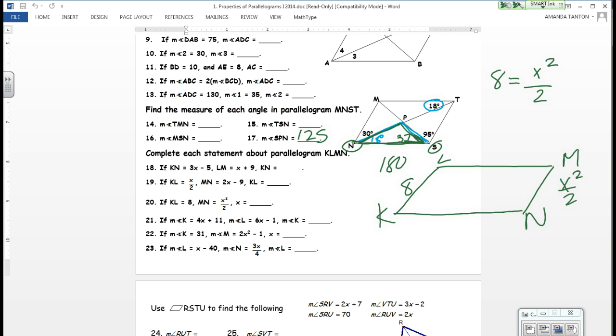We know that opposite sides are congruent. We know that 8 equals x squared over 2. The geometry is over. Now we're back in algebra 1 trying to solve for x. What's the opposite of dividing by 2? Multiply by 2. So 16 equals x squared.